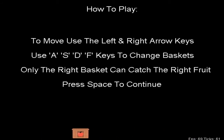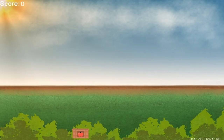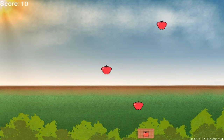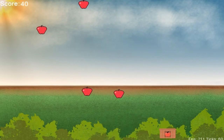Use the A, S, D, F keys to change baskets. Looking at the baskets: A is apple, S is pear, D is orange, and F is lemon. As you can see, you can change the different baskets. Only the right basket can catch the right fruit — you'll see what that means in a minute. Press space to continue. Now we're in the game — there's fruit falling from nowhere!